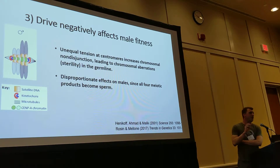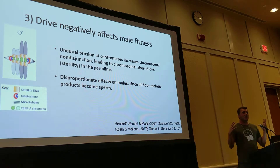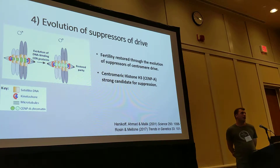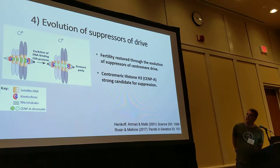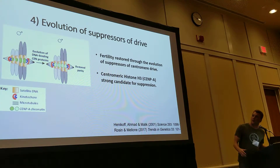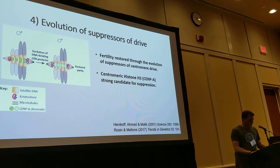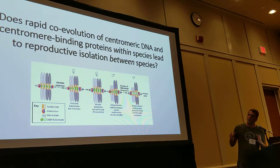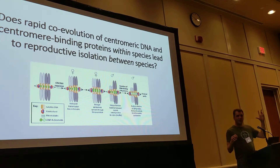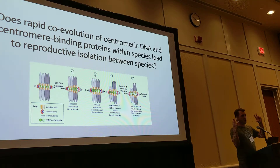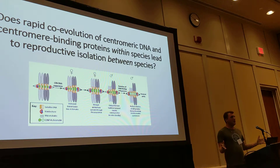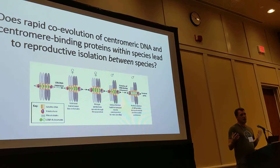This male sterility would impose selection to make centromeres of equal strength, and that coevolution could come by modifying both centromeres equally to retain parity among centromeres. So in this way, you have a coevolutionary scenario where centromere DNA sequence evolves rapidly, and CENP-A comes and suppresses drive. They're always going back and forth. The question for speciation is: does this rapid coevolution within species lead to hybrid incompatibilities between species?